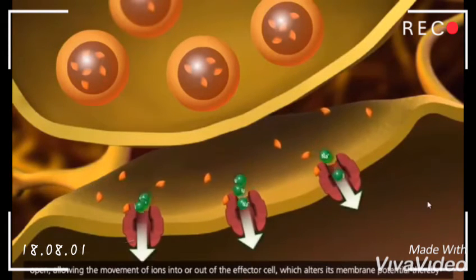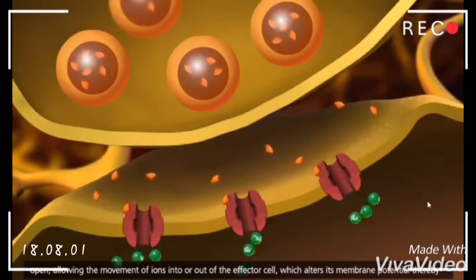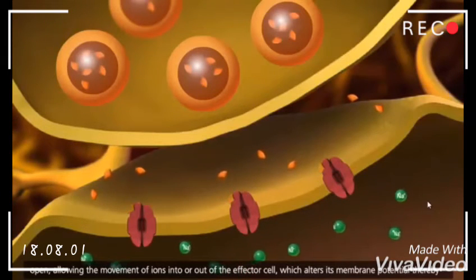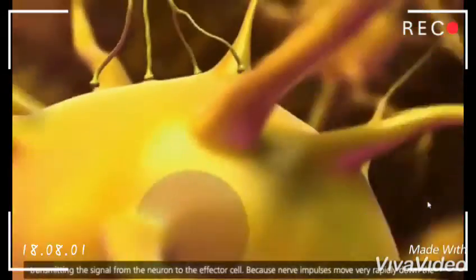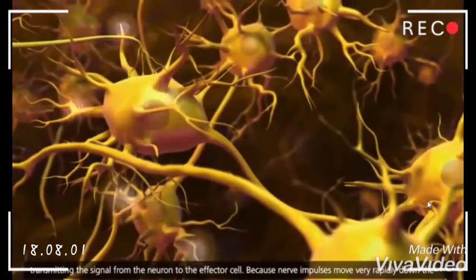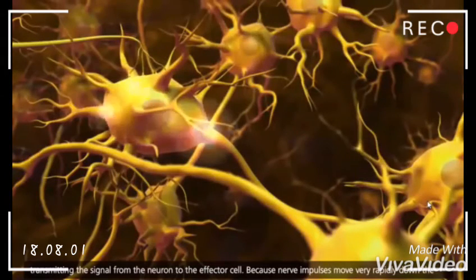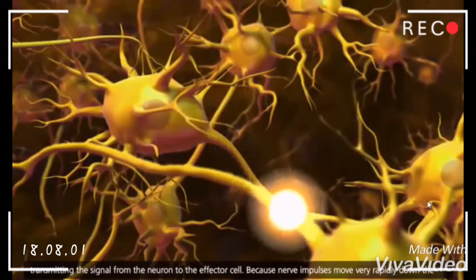Neurotransmitters bind to the adjacent cell at receptor sites attached to ion channels. The channels open, allowing the movement of ions into or out of the effector cell, which alters its membrane potential, thereby transmitting the signal from the neuron to the effector cell.